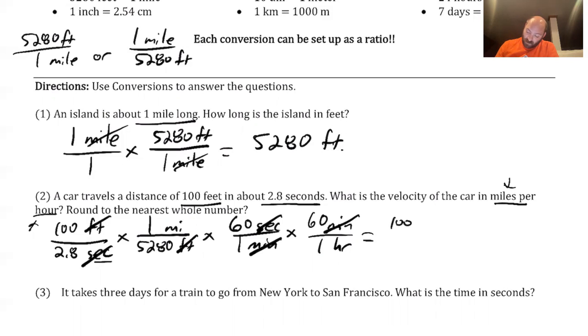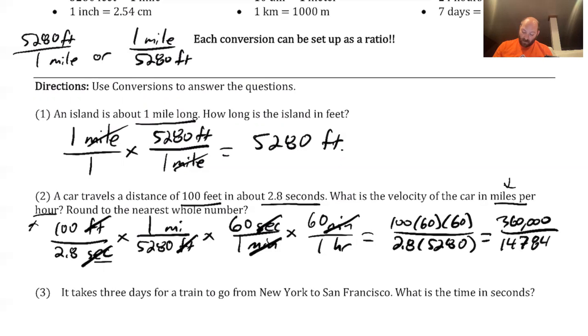So I look at my fractions. I've got 100 times 60 times 60 over denominator of 2.8 times 5,280. That's all I'm doing. I'm just doing my multiplication here, multiplication and division. So I've got 100 times 60 times 60. So that's going to give me 360,000. And then 2.8 times 5,280. It's going to give me 14,784. And my last step is to go ahead and divide these out. So I got 360,000 divided by 14,784.